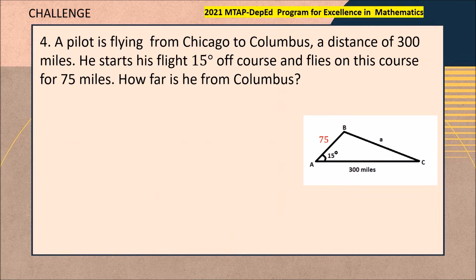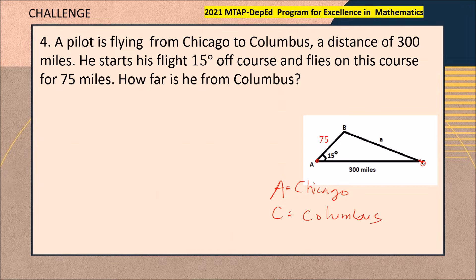Based on our illustration here, point A represents the location of Chicago, while the letter C is the location of Columbus. From the given problem, the distance from Chicago to Columbus is 300 miles.